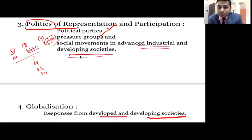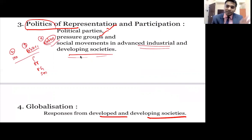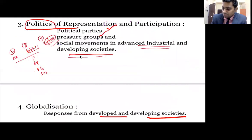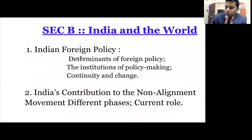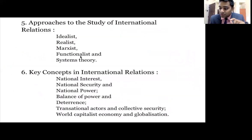So, Paper Two is about Comparative Politics and International Relations. The first four chapters deal with Comparative Politics, and they are very simple to remember. The rest of the chapters — Chapters 5 through 11 and all of Section B — are International Relations. Importantly, International Relations does not start in Section B; it starts from Chapter 5 in Section A itself.